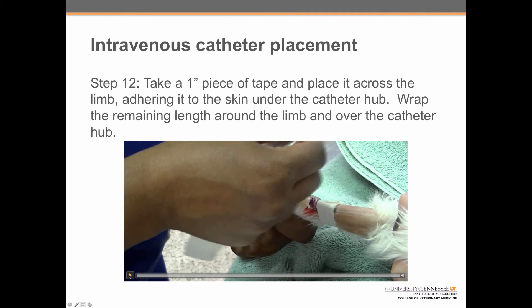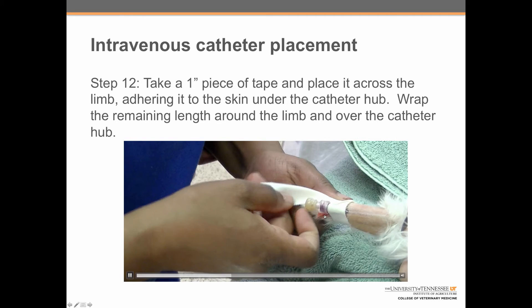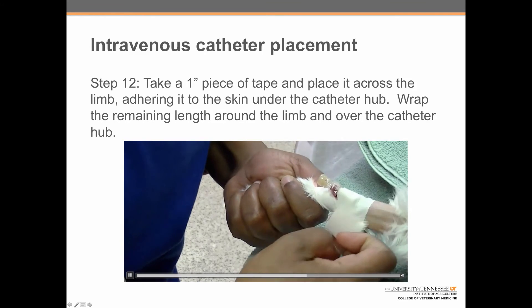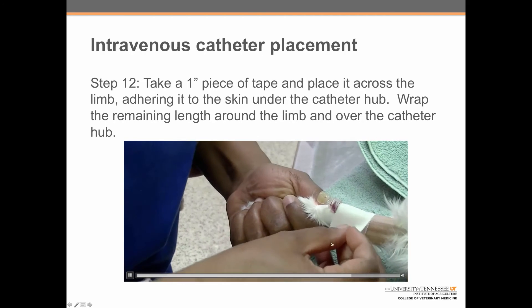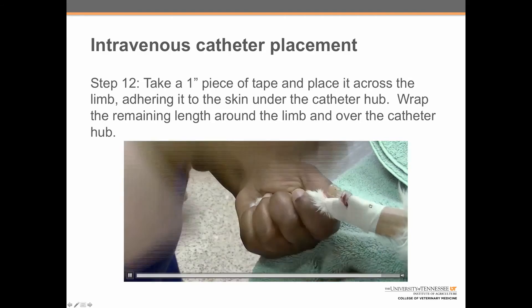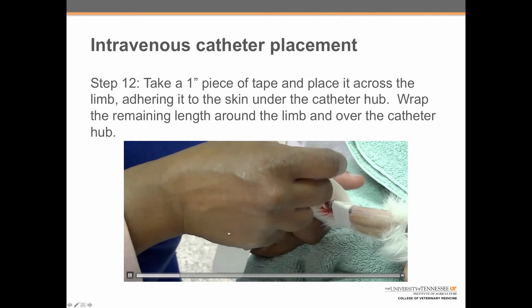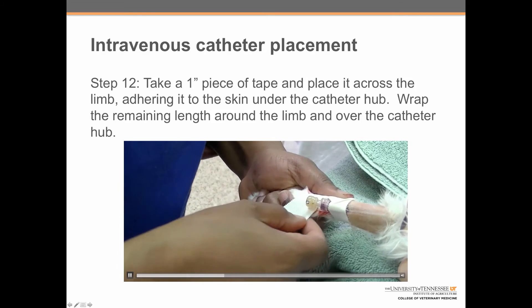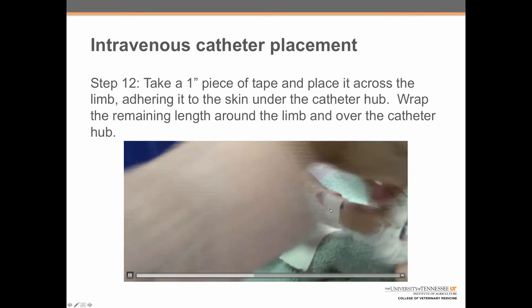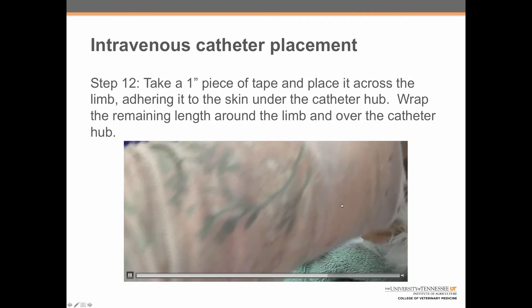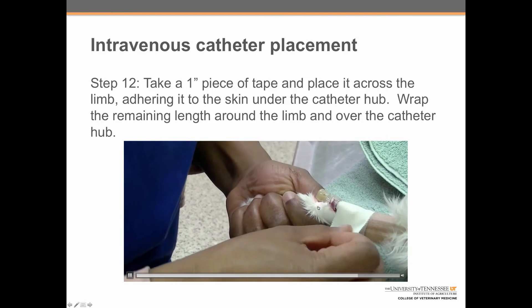Step 12: take a one-inch piece of tape and place it across the limb, adhering it to the skin under the catheter hub. She slides the tape over any blood to get the hair out of the way, then wraps the tape around the catheter site to secure it. The tape is slid under the injection port and over the fur, then wrapped across over the top to securely hold the catheter in place.